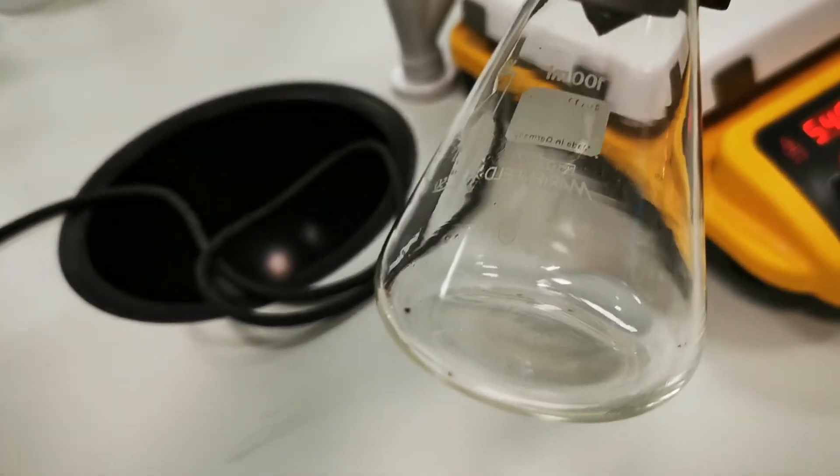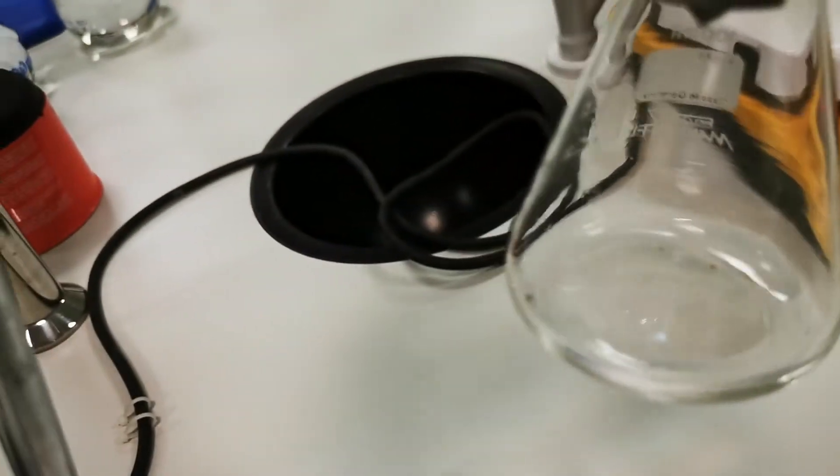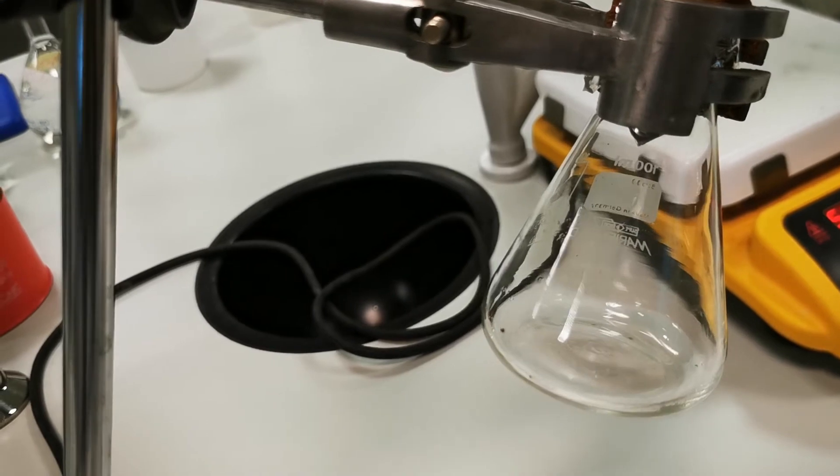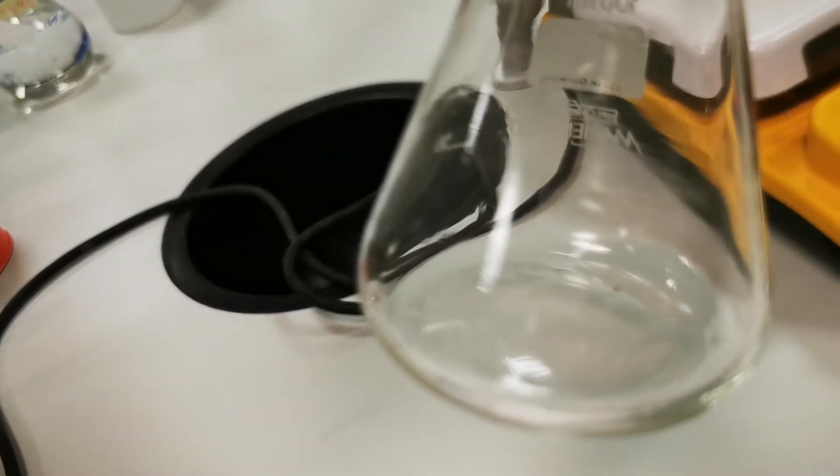As you can see now, I have some liquid in the Erlenmeyer flask. This is the gas that is, again, condensing back to liquid.